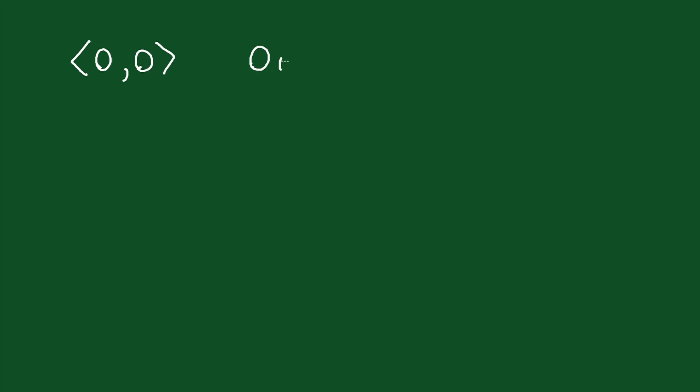I could also write this like this: zero i plus zero j. This is also the zero vector. Now what does this vector actually look like? Well, these first numbers here usually tell us how far we go to the right or to the left. And the second number tells us how far we go up or down. But if these dimensions are both zero, if this is a length of zero and this is a length of zero...